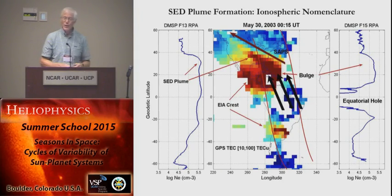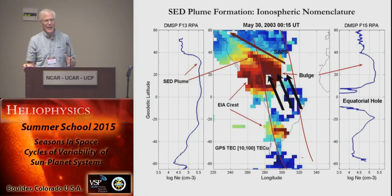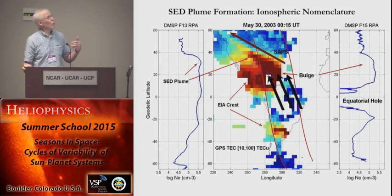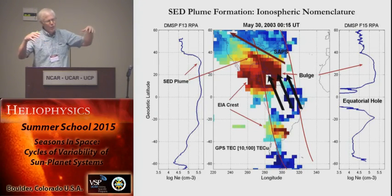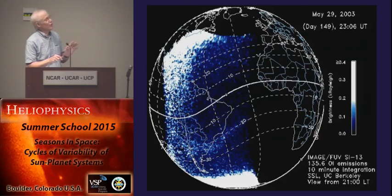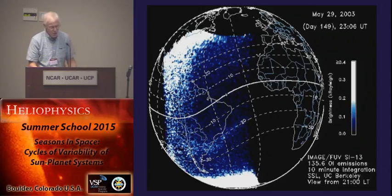Another interesting thing we did was with the NASA Image satellite. Bill Lotko yesterday showed you a picture of the Earth's plasmasphere taken from the high-altitude Image satellite, looking at emissions from helium ions, showing the plasmasphere going out into space. You can see these plumes of the erosion of the plasmasphere. Jerry Goldstein did a lot of publications on this — he sees them out in the plasmasphere looking down from above the outer edge. The Image satellite also had a far-ultraviolet FUV imager, not the EUV imager, that can actually see F-region plasma.